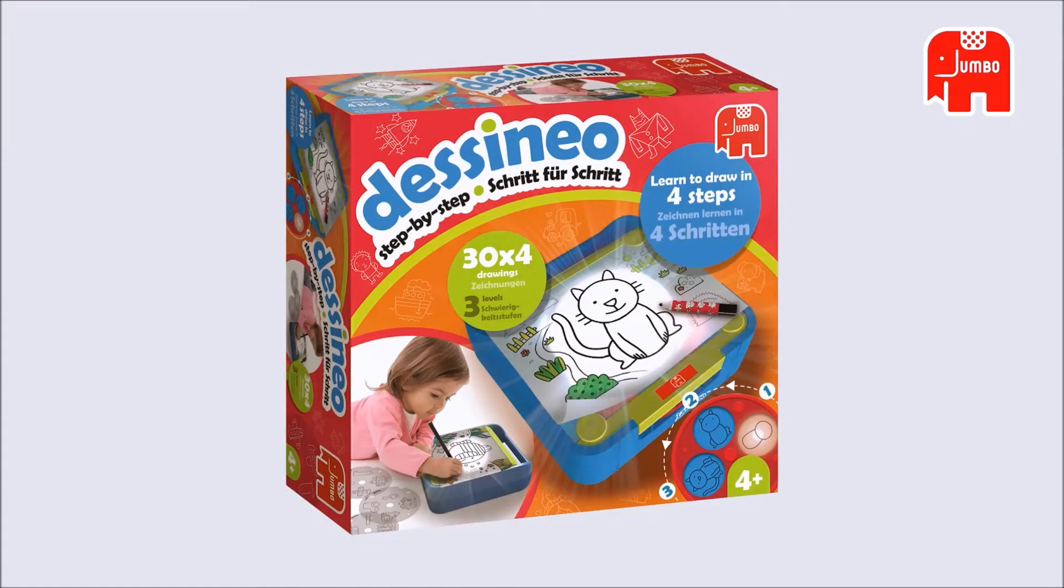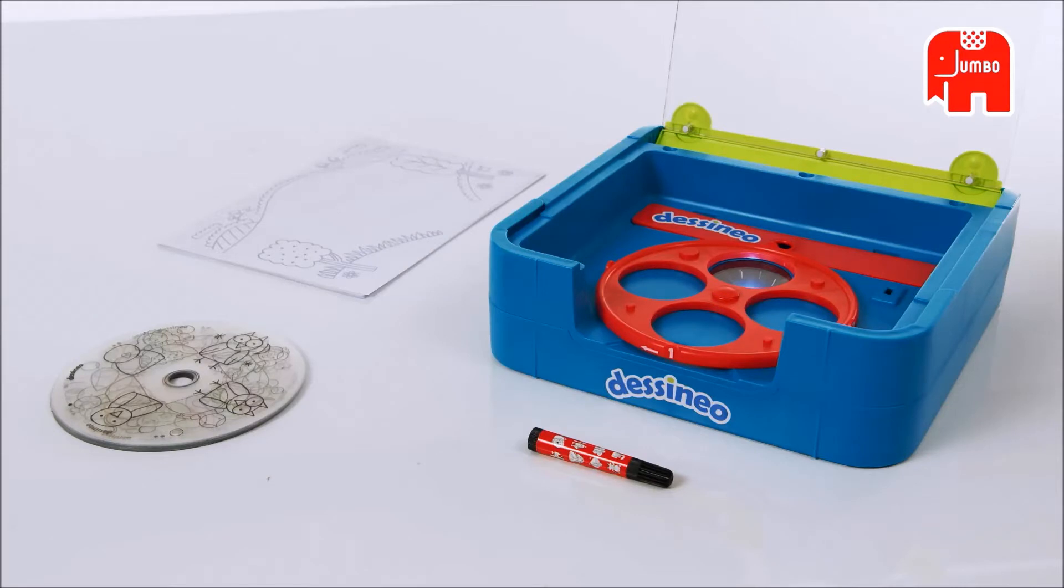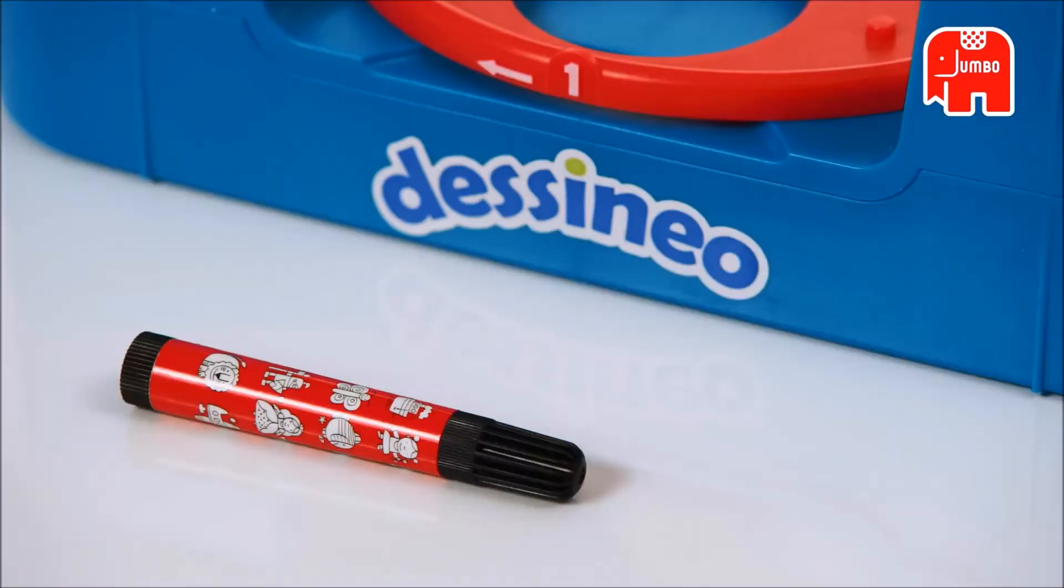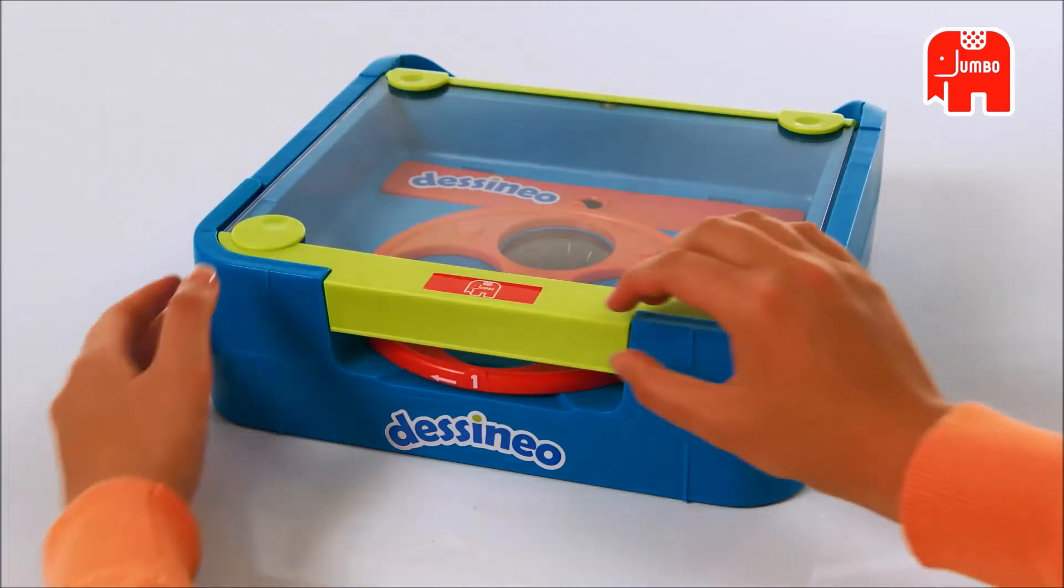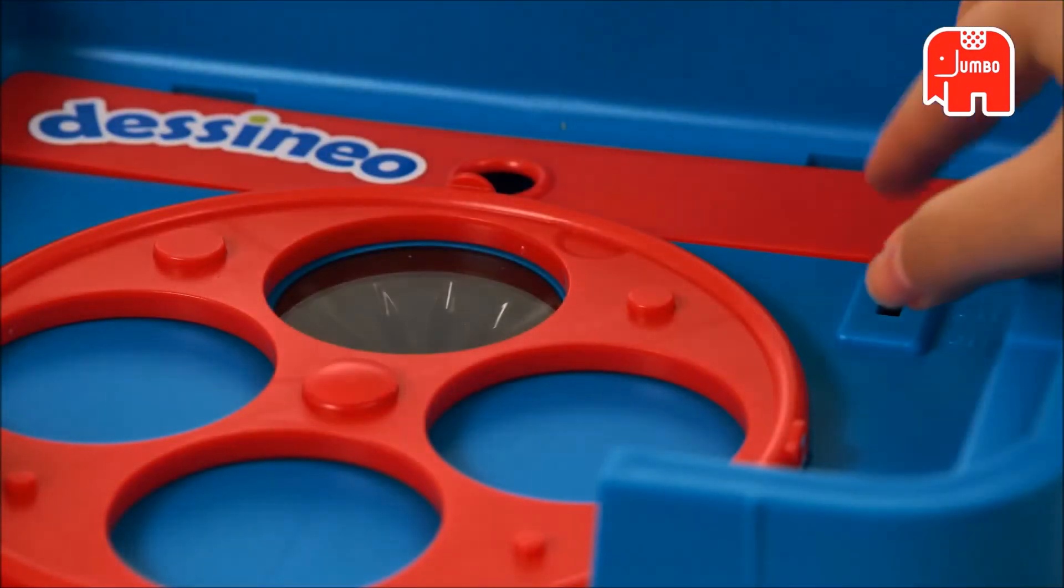Learn to draw step-by-step with Desineo by Jumbo. Desineo is specially designed for children aged four and older. It helps your child learn to draw in a fun and simple way.